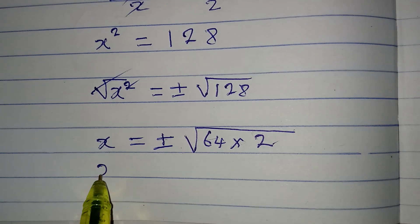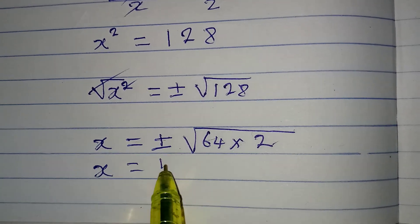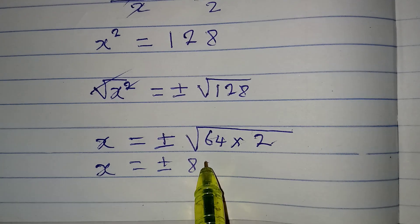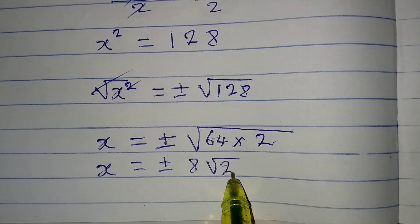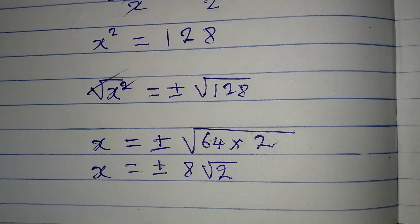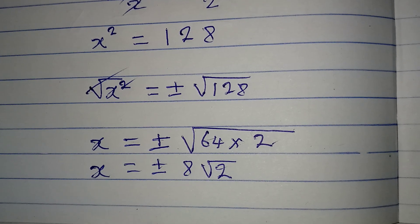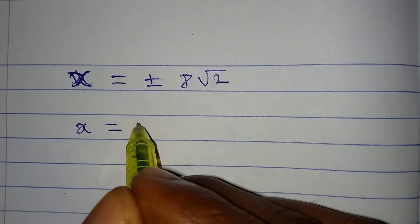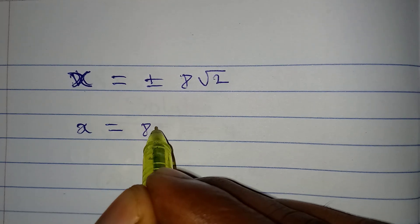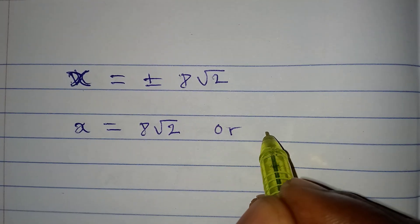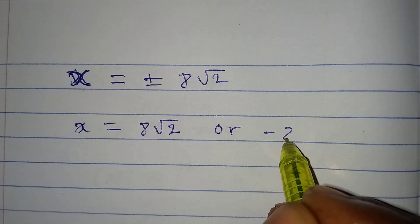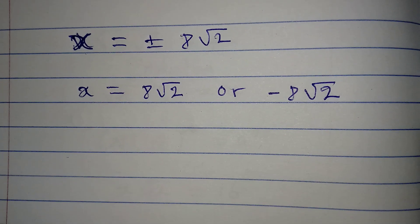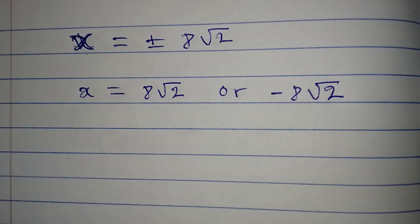Now the square root of 64 is 8, so x is equal to positive or negative 8 root 2. This means that x is equal to plus 8 root 2 or minus 8 root 2. Now let's try to check to know if both of them satisfy the given equation.